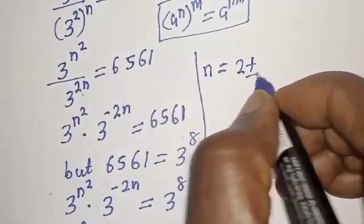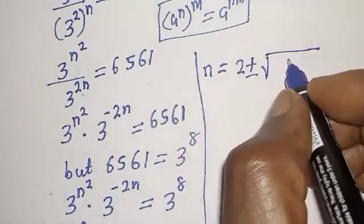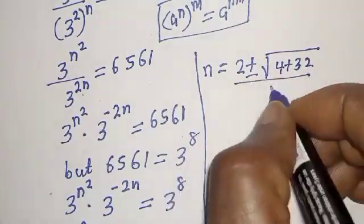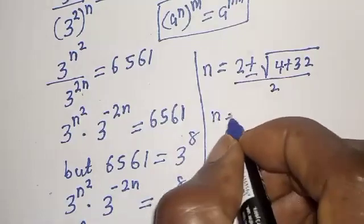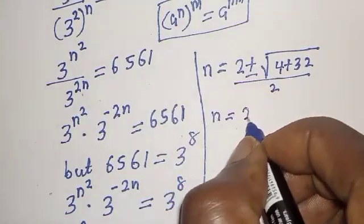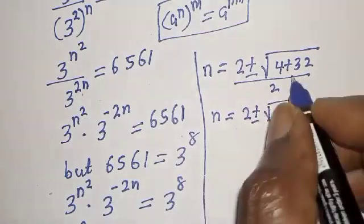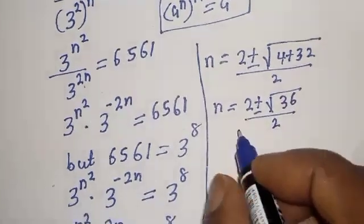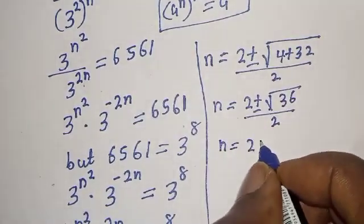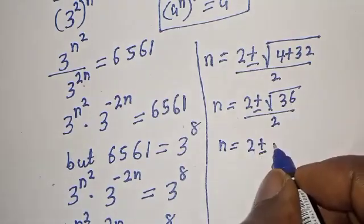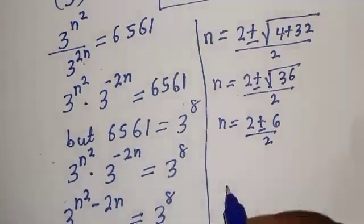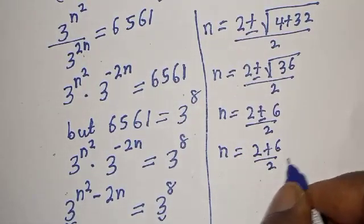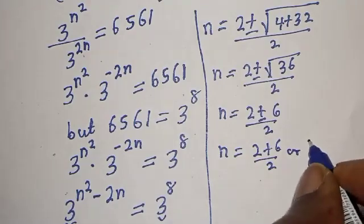So n equals 2 plus or minus square root of 4 plus 32, which is 36, over 2. Then n equals 2 plus or minus square root of 36, and the square root of 36 is 6. So n equals 2 plus or minus 6, over 2.